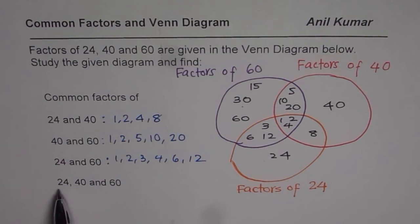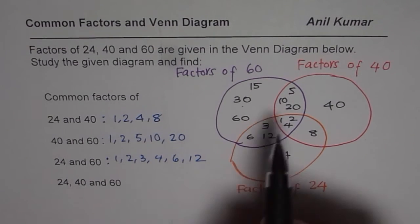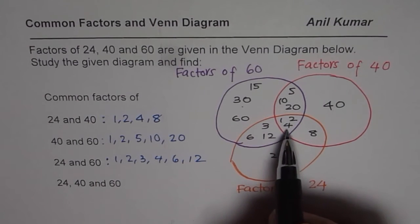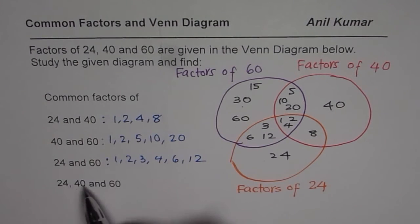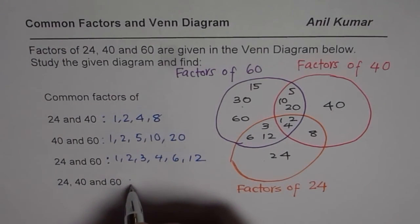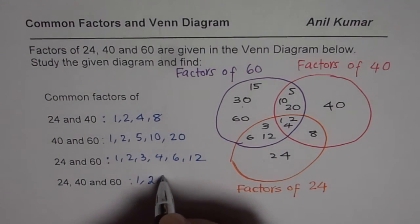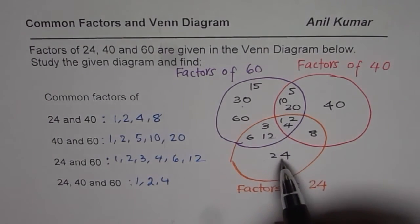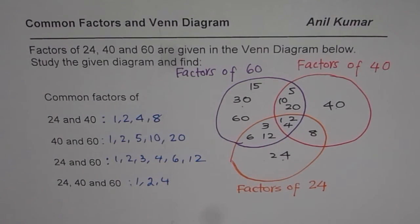Now last, common factors of 24, 40, and 60. Which is that group? Well, the group here is the one which has all three factors: 1, 2, and 4. These are the common factors of 24, 40, and 60.